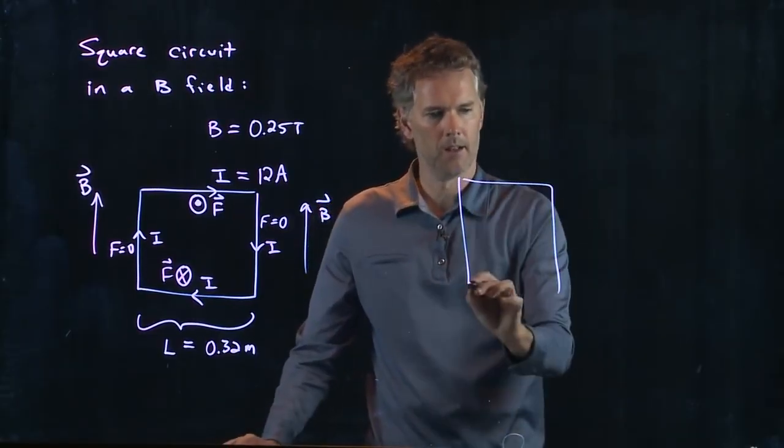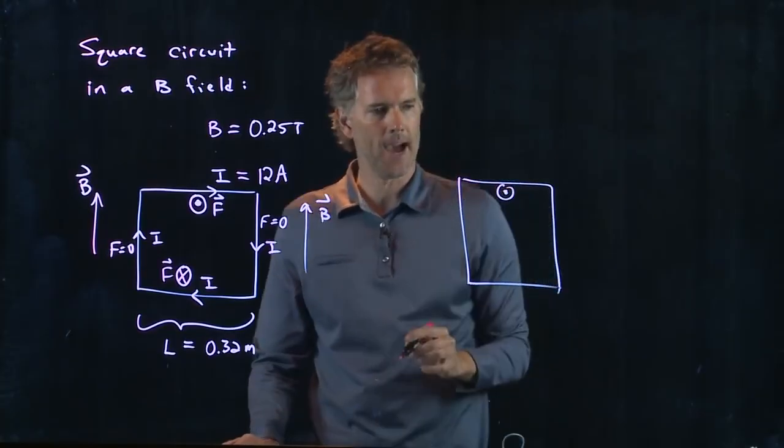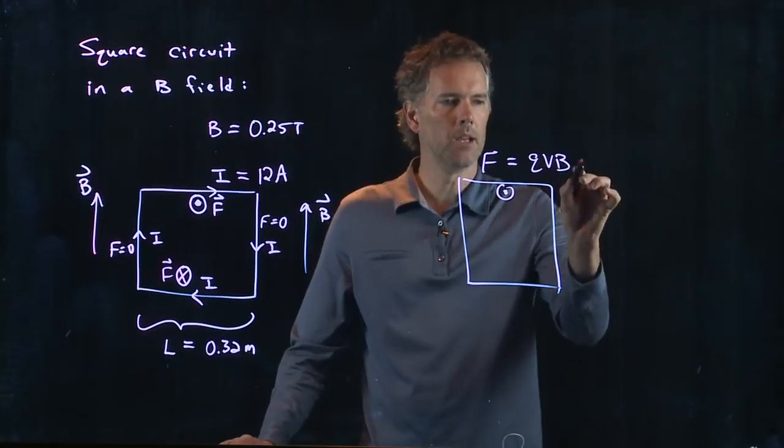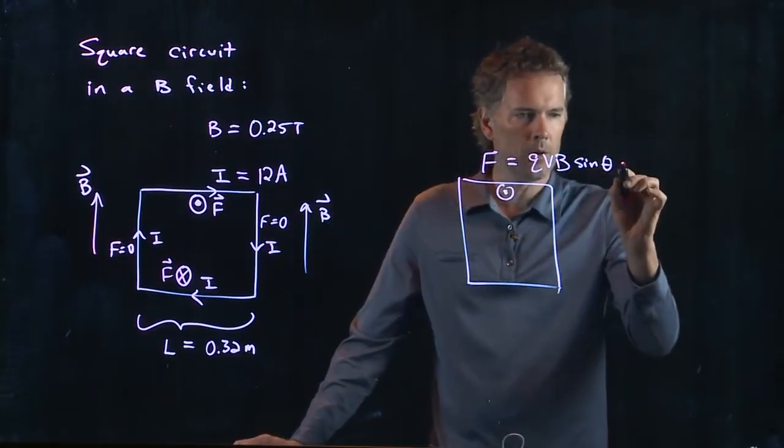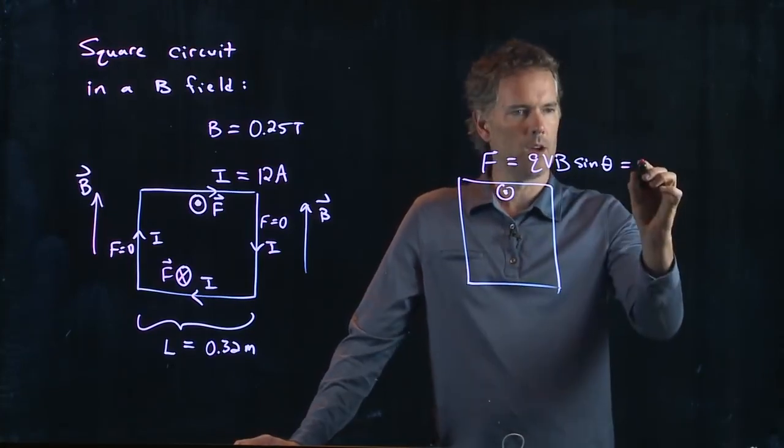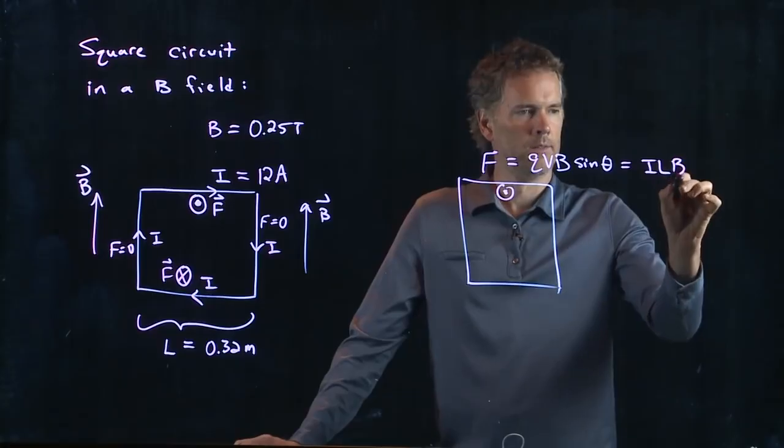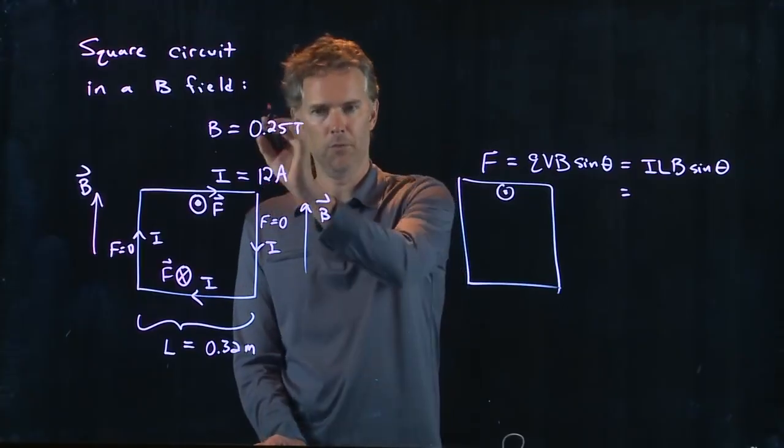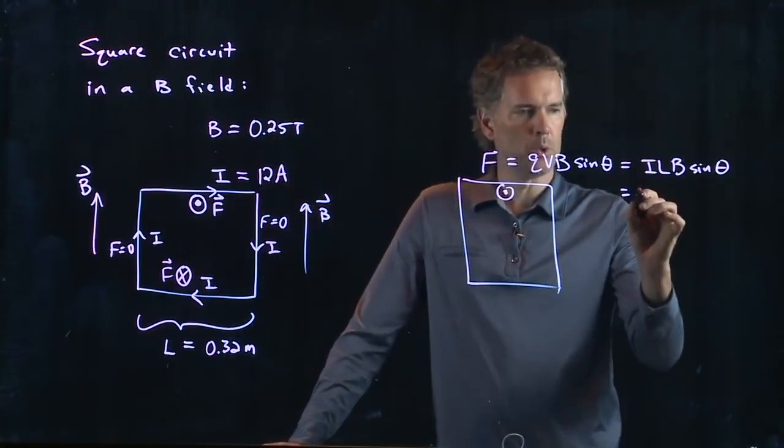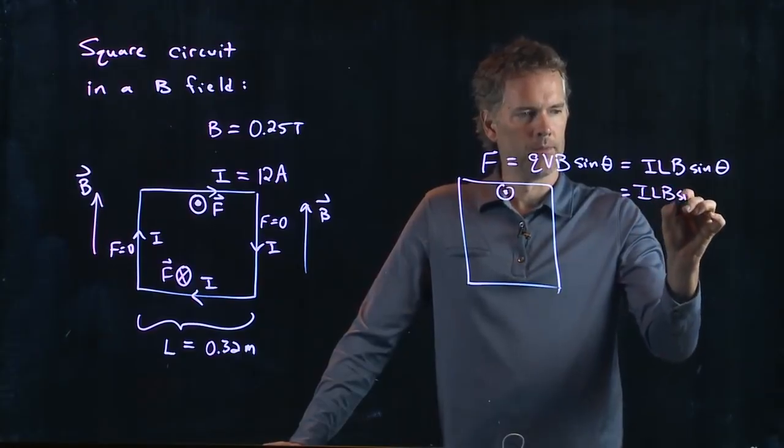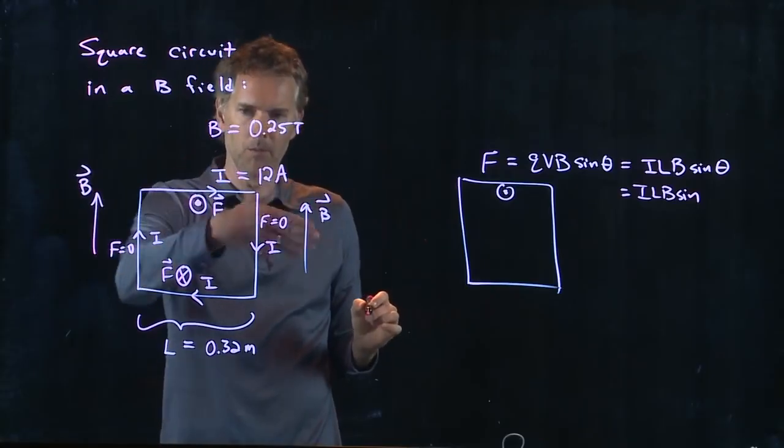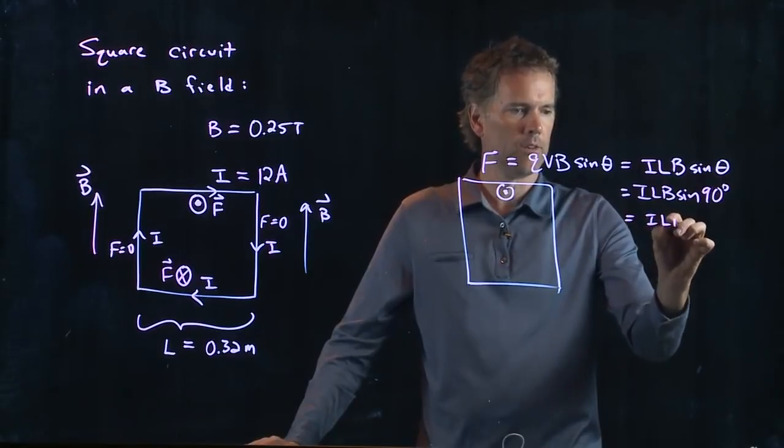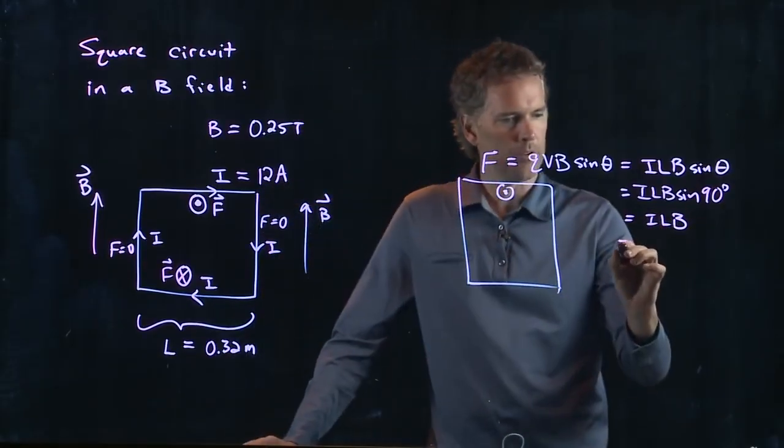The top side, we said there is a force coming out of the screen. That force is going to be Q V B sine theta. But we know that Q V turns into I L. We give you L, we give you B. What is the angle between those two? Well, I was to the right, B was up. Those are 90 degrees to each other. Sine of 90 is just one. So we get I L B and we know what those numbers are.